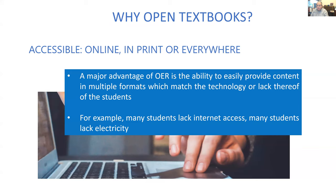So let's go back to our question: how can students get their textbooks? They need to be accessible online, in print, and everywhere. It's a real problem — highlighted in the last six months — that many students lack internet access. Some of them lack electricity. Certainly globally, that's an issue. Without that, they can't get their materials. You hear stories about students sitting out in their cars to feed off the university's internet in the parking lot.